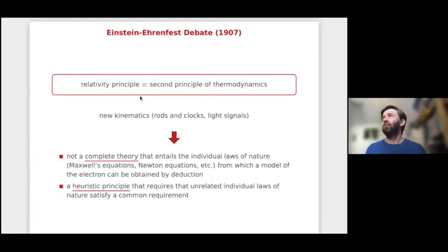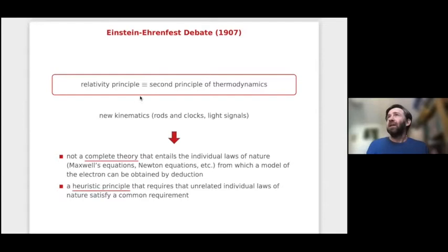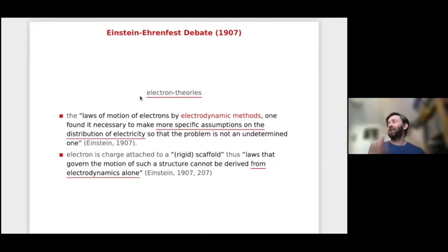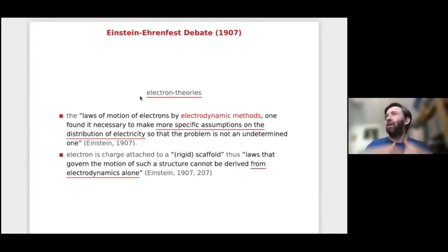Thus we are not dealing with a system in which individual laws are entailed, but with a principle — just like the second principle of thermodynamics, which permits the reduction of certain laws to others. The new kinematics, confirmed by rods and clocks, makes claims about rods, clocks, and light signals that can be confirmed independently of any dynamical laws. We don't have any individual laws like mechanics or thermodynamics entailed in special relativity. The theory only uses a heuristic principle: we obtain new results by requiring that the laws satisfy the new kinematics.